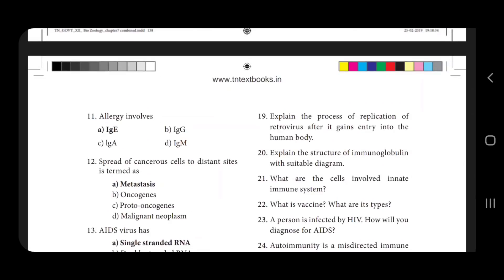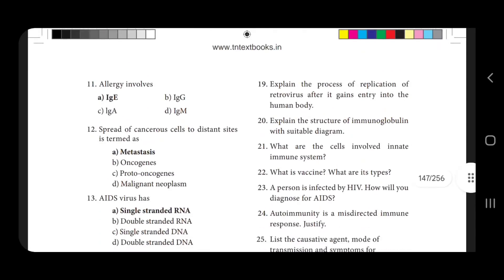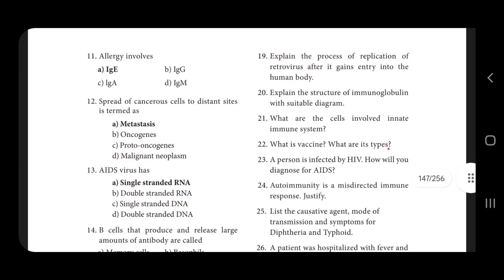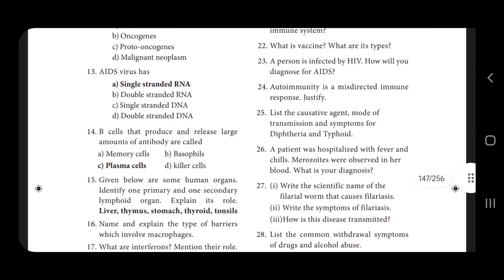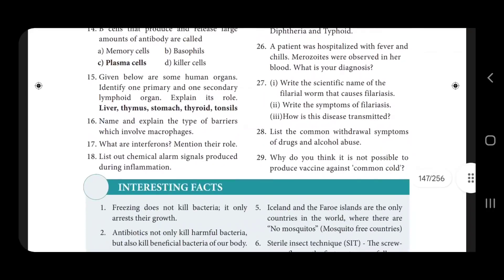Structure of hemoglobin — 5 mark confirmed. What are the types? 3 mark. List the causative agent of diphtheria and typhoid — 3 mark. Drugs and alcohol abuse is also covered.